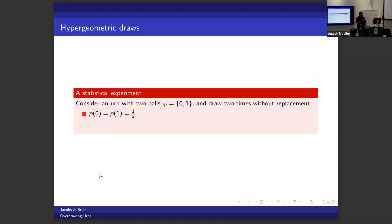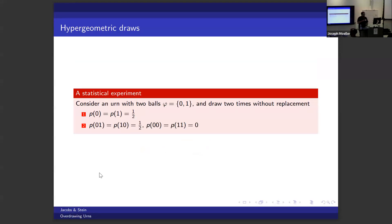Let's think about a very classical statistical experiment: we have an urn and we draw balls from it without replacement. Start with one zero and one one in this urn. The probability of drawing either the zero or the one is both one half. We make a second draw, and we know what it has to be given the first one. So the sequences zero-one and one-zero each have probability one half, while zero-zero and one-one have probability zero.